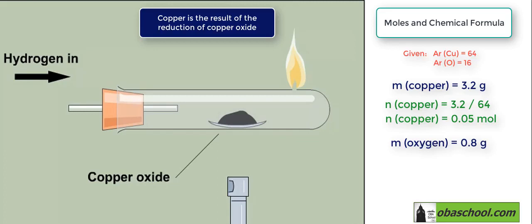The same thing goes for the number of moles of oxygen, where it is 0.8, the mass of oxygen, over 16, which is the relative formula mass of oxygen. This gives 0.05 moles.